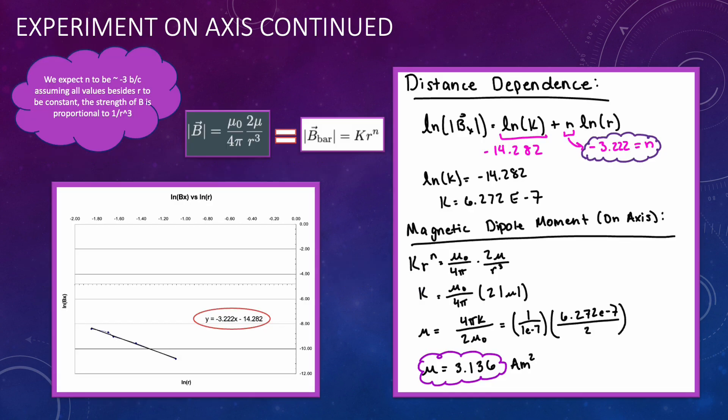We can find the distance dependence power in our chart calculated by Excel as the slope of our natural log of magnetic field in the x direction versus the natural log distance from the magnet chart. We see this to be negative 3.22. Since the relationship between magnetic field is proportional to the r magnitude by 1 over r cubed we would expect this value to come out to around negative 3, so this is pretty good.